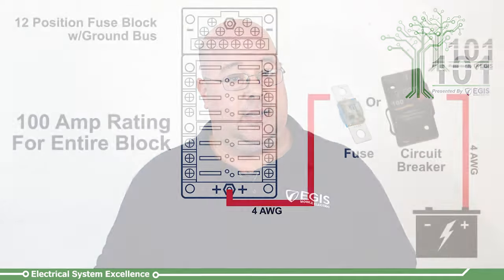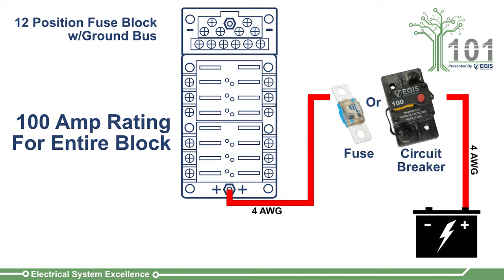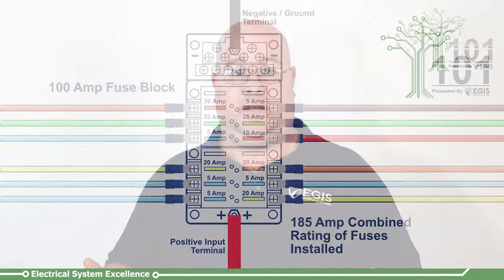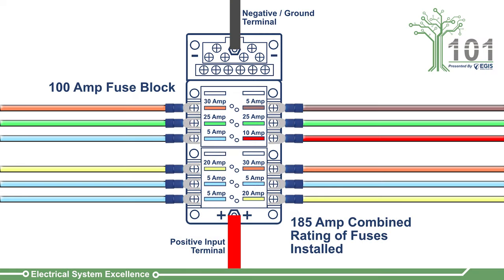In this example, the 12-position fuse block is rated for a maximum of 100 amps of input current and therefore has a 4-gauge cable connected to the input protected by a 100-amp fuse at the battery. The multitude of output circuits are protected by a total of 185 potential amps of fuse-protected wires.